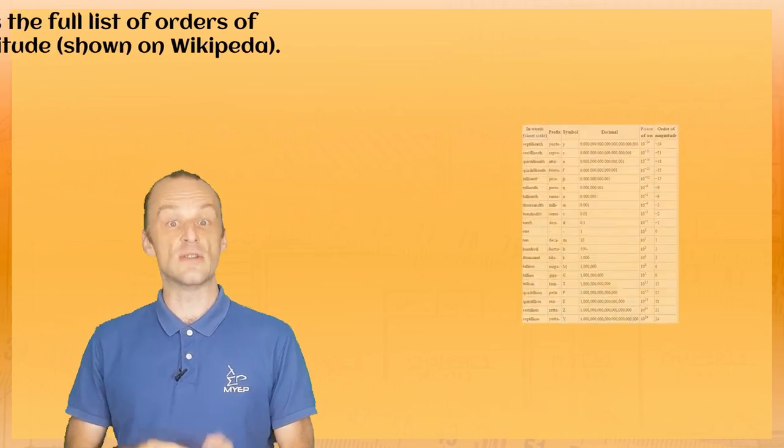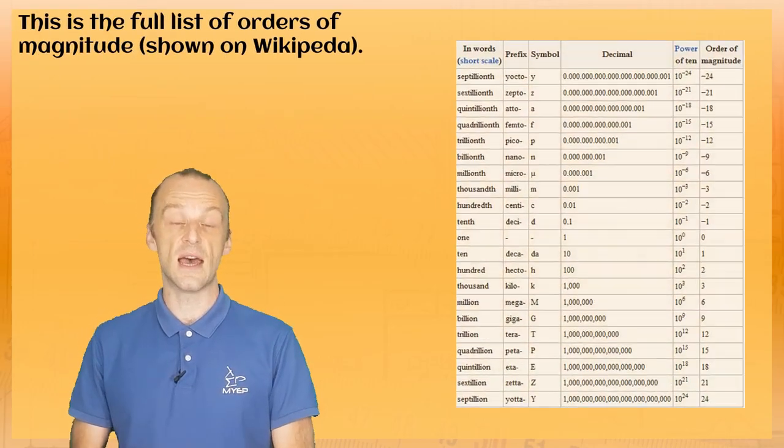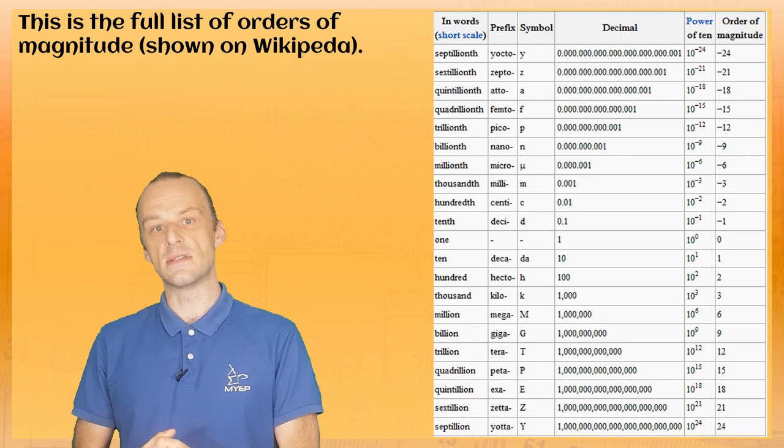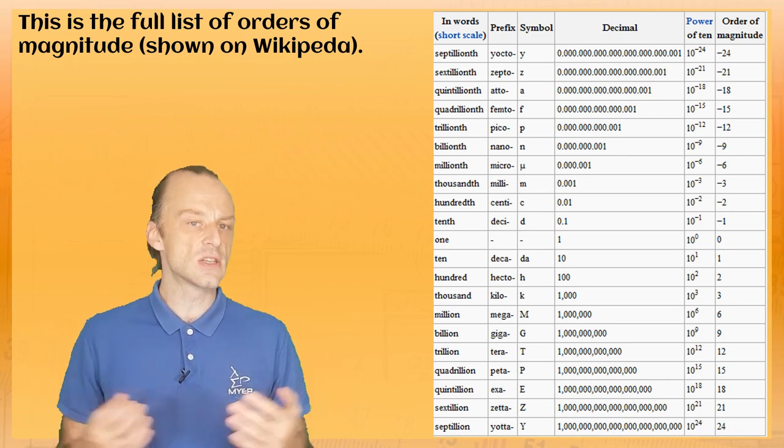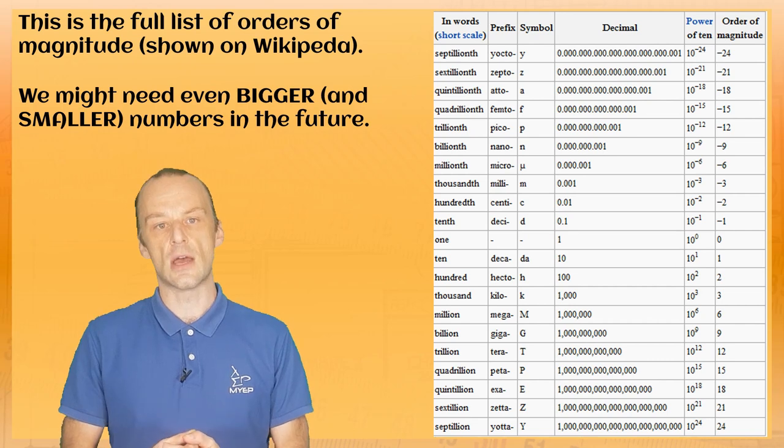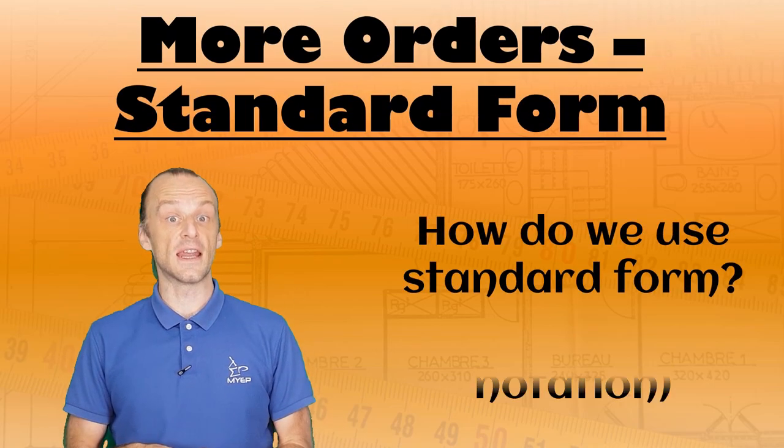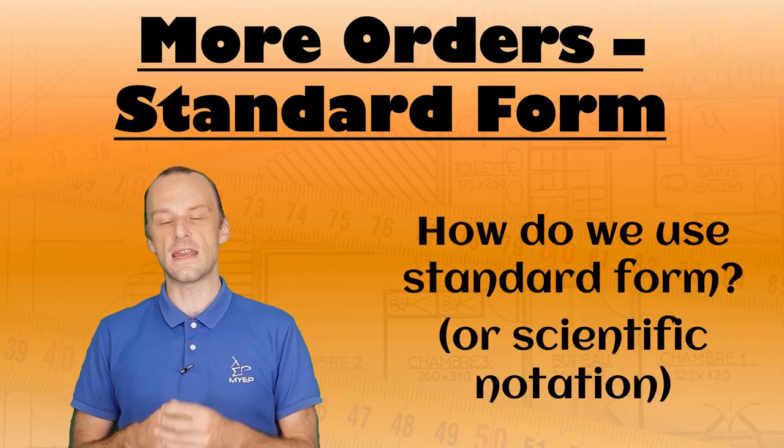Here, you can see a full list of orders of magnitude as shown on Wikipedia, and all of the different names that they have. To be honest, we might need even bigger and smaller numbers in the future. But there is another way that scientists can use to make numbers bigger or smaller conveniently, and that's what we're going to look at now.